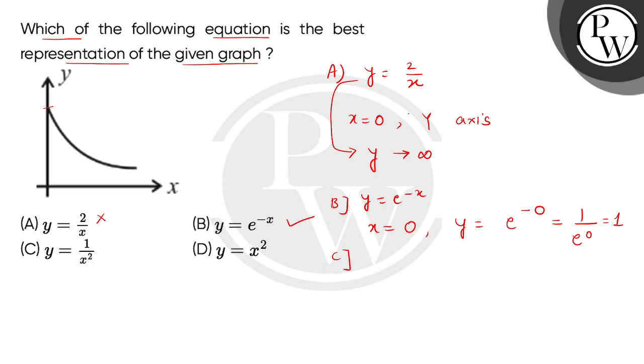Then in C, the same situation as A. When we put X to 0, Y tends to infinity, so this is also not correct. And in D, when we put X to 0, Y's value is 0. It means that we need to get a point here. So D is not the correct answer.